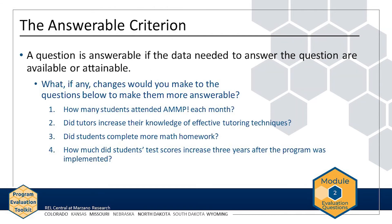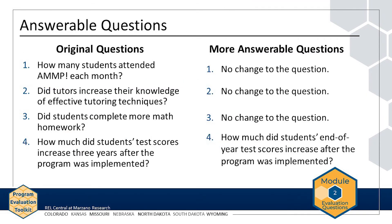The answerable criterion refers to whether the data needed to answer questions are available or attainable. Good questions are useless if they cannot be answered. The AMP evaluation team reviews their revised questions against the answerable criterion and decides that data on monthly AMP attendance, tutors' knowledge of effective tutoring techniques, and student homework completion rates are attainable, so the team does not change evaluation questions 1, 2, or 3.